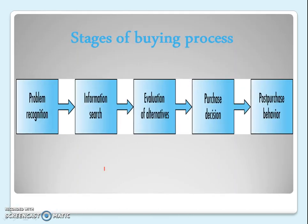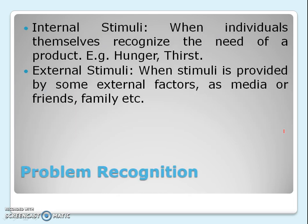In today's video we are going to discuss the consumer buying process. The consumer buying process starts with problem recognition and ends with post-purchase behavior. The second step is information search, third is evaluation of alternatives, fourth is purchase decision, and finally the post-purchase behavior of the customer.